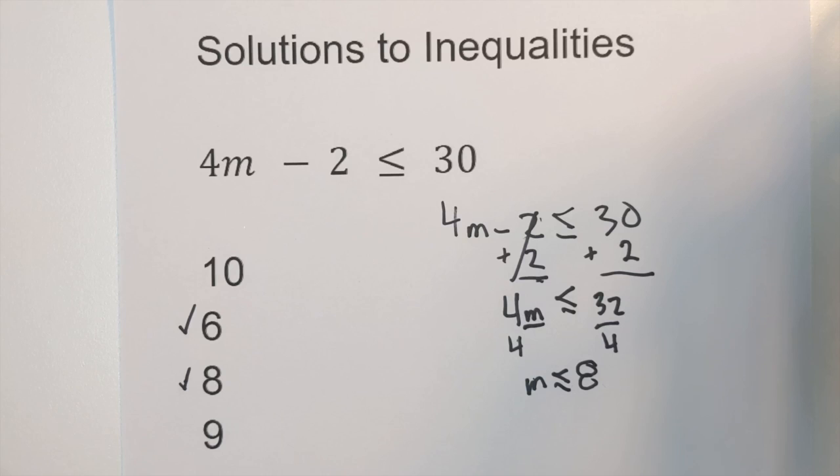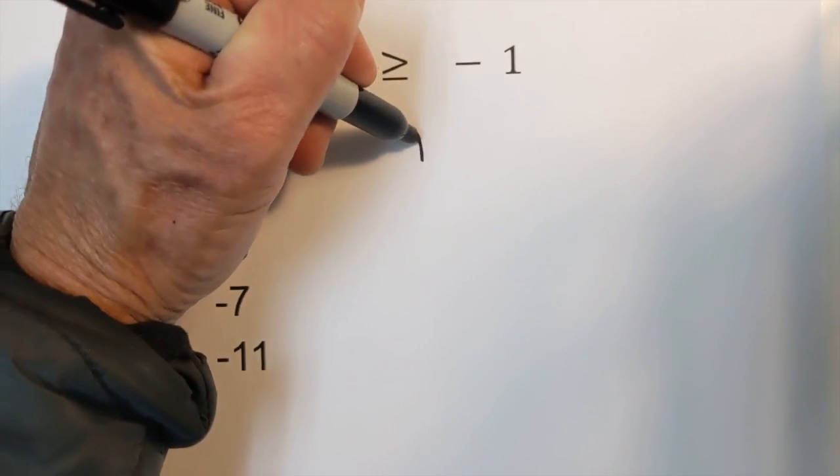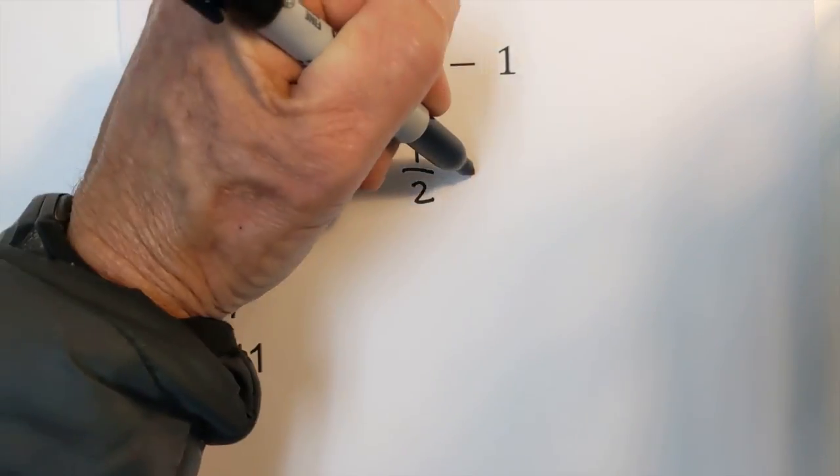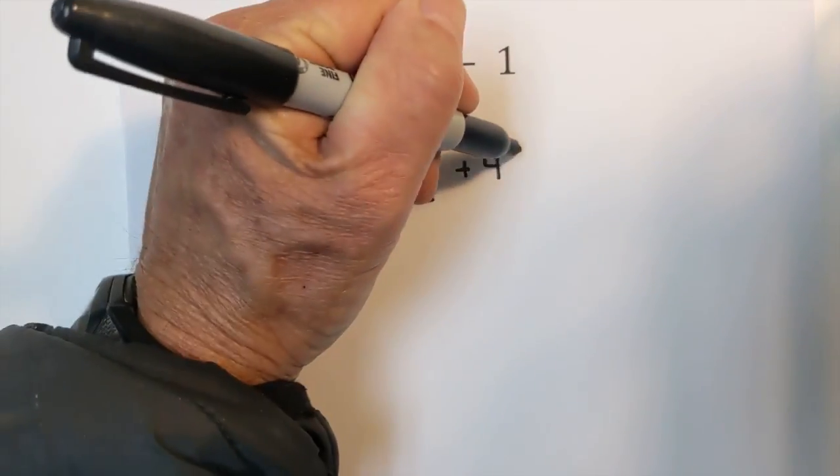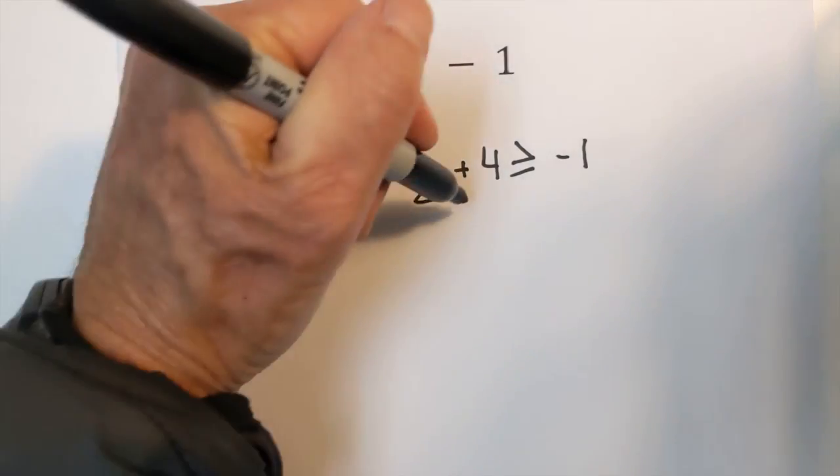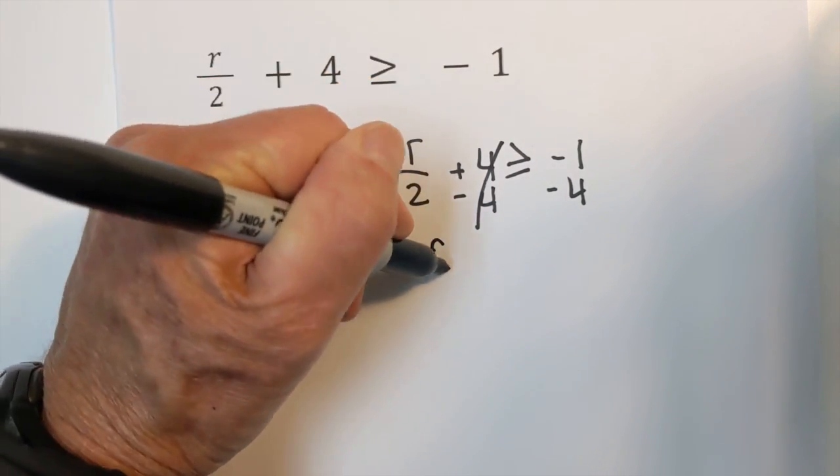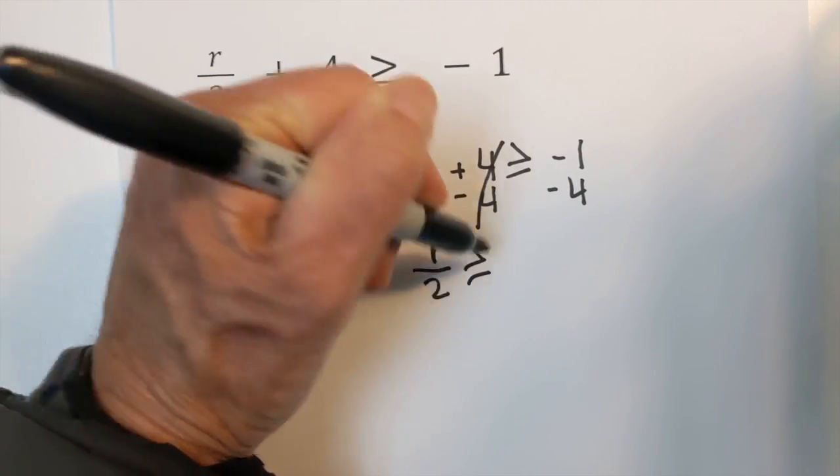Let's work another example. Okay again let's solve the inequality. So I'm going to rewrite r over 2 plus 4 is greater than or equal to negative 1. I'm going to first subtract 4 from both sides. These cancel. Bring down r over 2 is greater than or equal to.